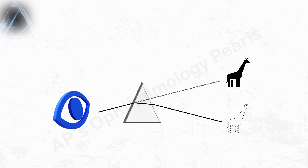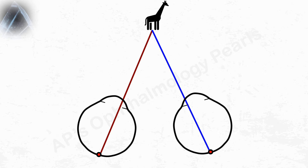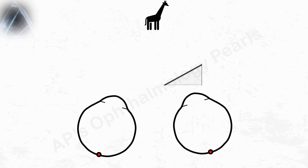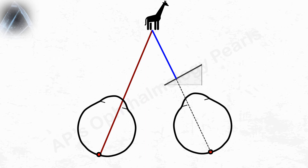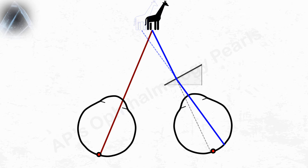Why does this happen? Normally, light rays from an object fall on the fovea of both eyes, producing binocular single vision. When a prism is placed in front of one eye, the rays, instead of falling on the fovea, are deviated towards the base and fall on an extra-foveal point, thus giving rise to diplopia. In order to restore binocular vision, the eye under the prism deviates such that the light rays fall on the fovea.